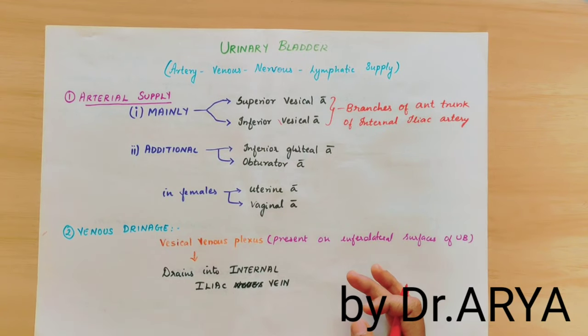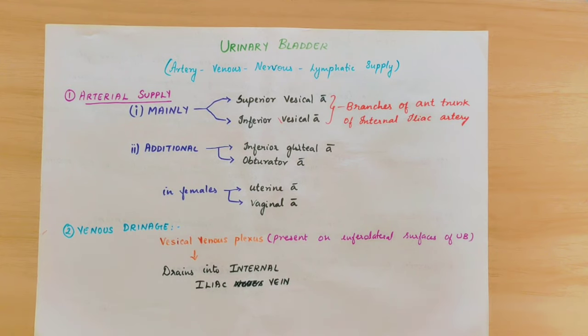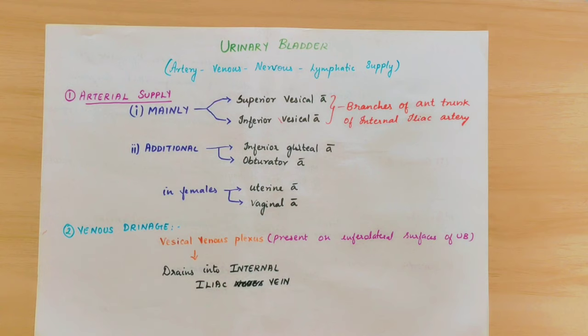Hello, welcome to my channel. We are looking at the urinary bladder anatomy. This is the 5th video. In this video, we are looking at the artery, venous, nerve supply and lymphatic drainage.